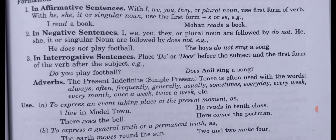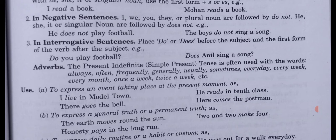In interrogative sentences, place 'do' or 'does' before the subject, and use the first form of the verb after the subject. Examples: 'Do you play football?' 'Does Anil sing a song?' The helping verb do/does comes at the beginning for yes/no questions. If it is a WH-family question, the WH word comes first — for example: 'What do you play?' 'What does Anil sing?'